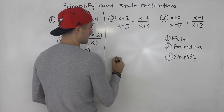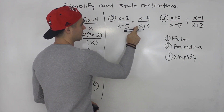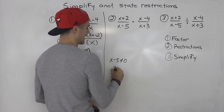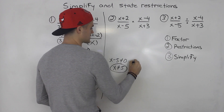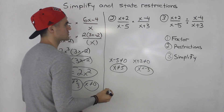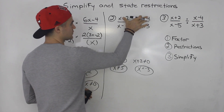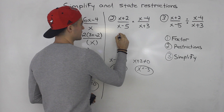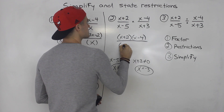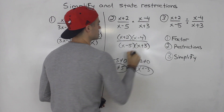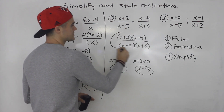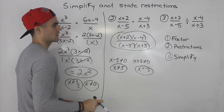Next, get the restrictions. When multiplying, the denominators can't equal zero. So x minus 5 cannot equal zero, meaning x cannot equal 5. And x plus 3 cannot equal zero, meaning x cannot equal negative 3. Those are the two restrictions. Then you combine the numerators and denominators: (x plus 2)(x minus 4) all over (x minus 5)(x plus 3). There's nothing to cancel, so that is the answer with those restrictions.